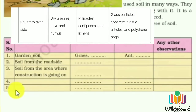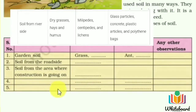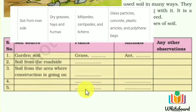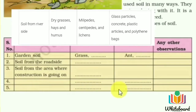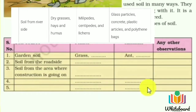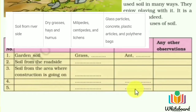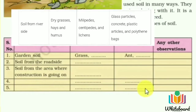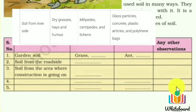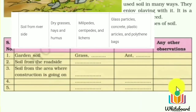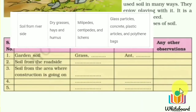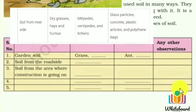Number 5 — Soil from riverside: plant parts include dry grasses, haze, and humus. Animal parts include millipedes, centipedes, and lichens. Other observations: glass particles, concrete, plastic articles, and polythene bags are found here as well.